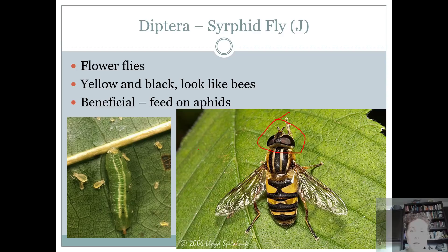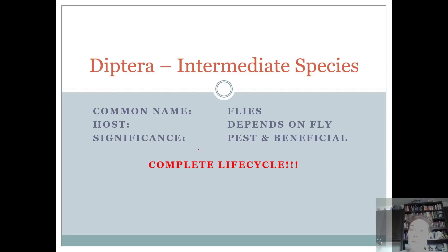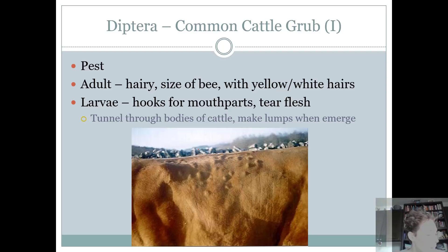If you're a junior in the 4-H entomology contest, you can go ahead and shut down and log off. We're going to cover now the intermediate and senior insects. Intermediates, you guys have just three more that you need to know. One is the common cattle grub.